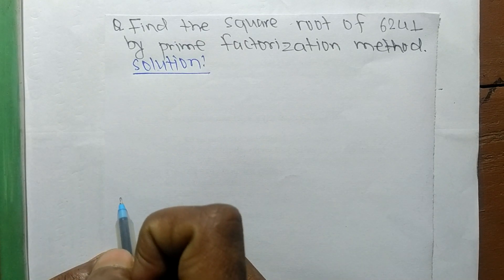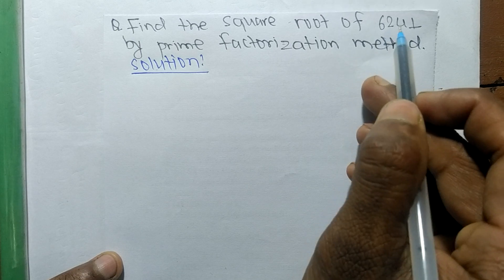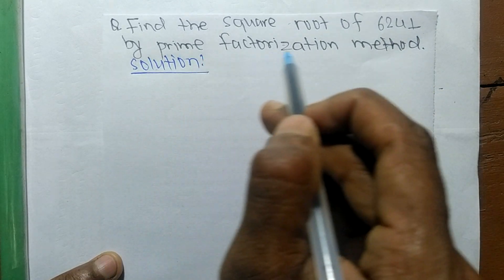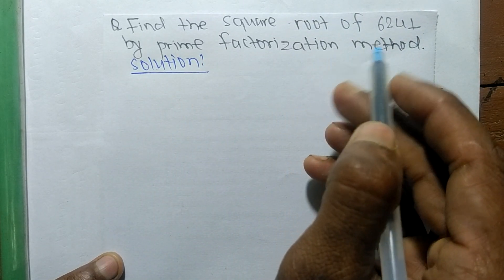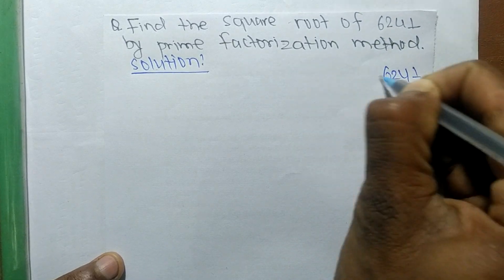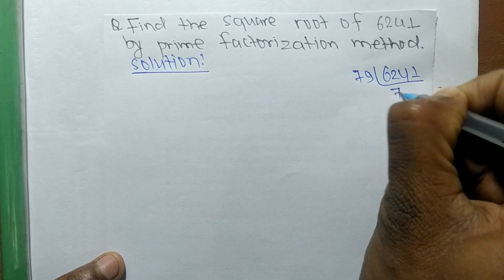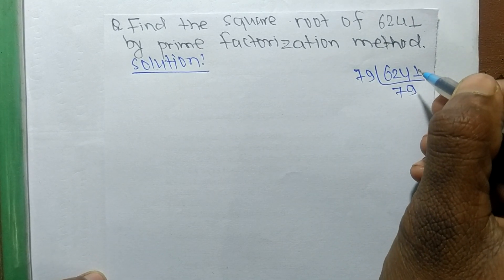Today in this video we shall learn to find the square root of 6241 by prime factorization method. First of all, we find out the prime factors of 6241. Its prime factors is 79 times 79.